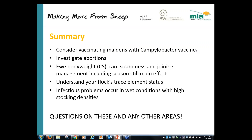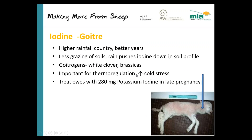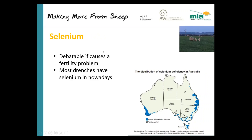Bruce is back online after a headset issue. Picking up where we left off on selenium — the main thing is that drenches these days all contain selenium, so it's really not much of a problem. Regarding copper, you need to be very careful about treating sheep with copper because you can certainly poison sheep by giving them too much, leading to dramatic deaths. Neither selenium nor copper are strongly associated with reproductive problems.